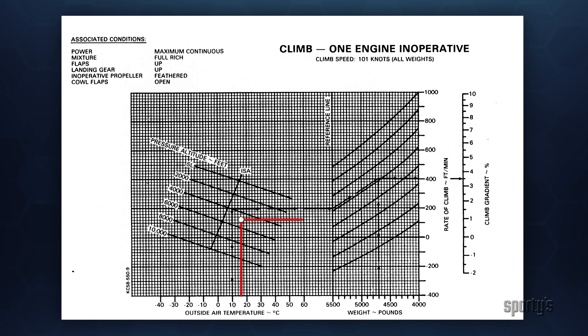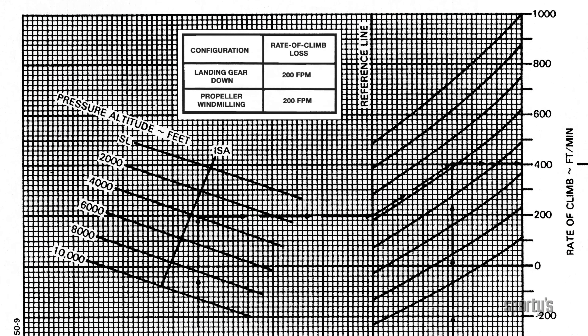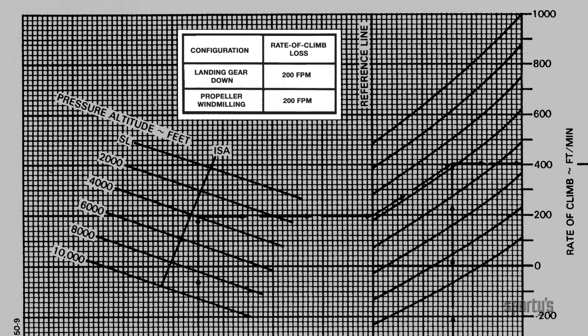Determining your single engine rate of climb is very important for multi-engine flying. Many of the decisions regarding your flight will be based upon this information. As with all charts, verify the conditions specified for this rate of climb. If the chart indicates that this climb rate is with the gear and flaps up and the propeller feathered, you won't get the calculated rate in any other configuration. Some manufacturers will list the climb penalties for variations from the stated conditions.